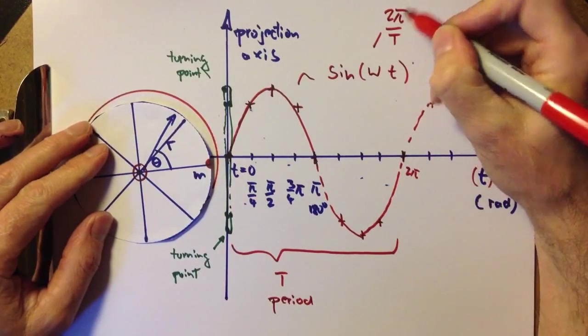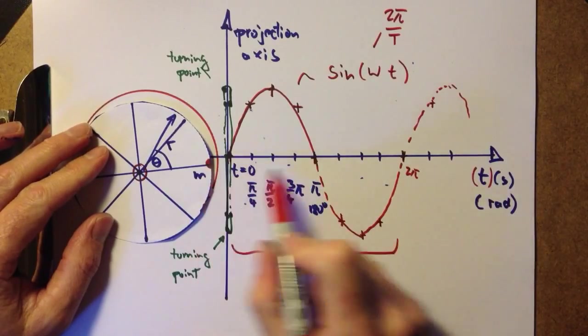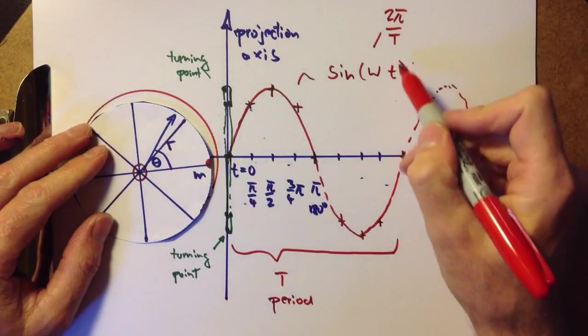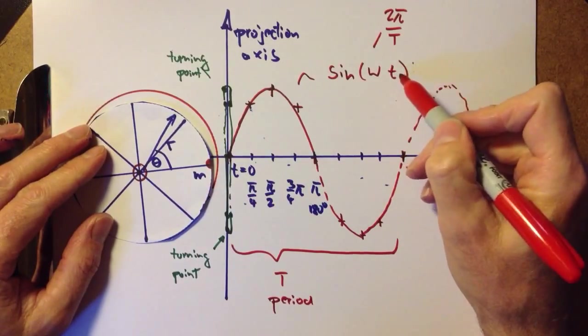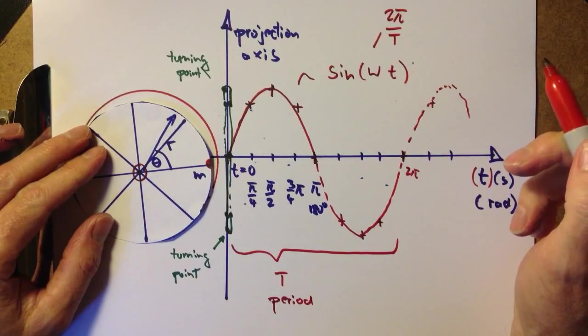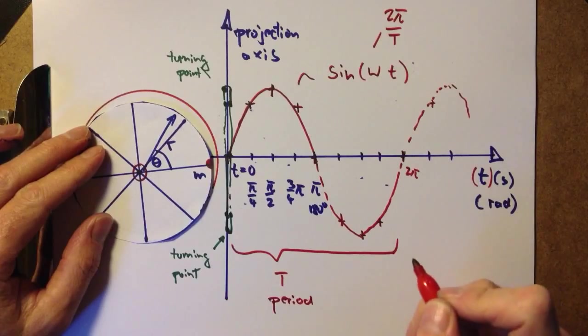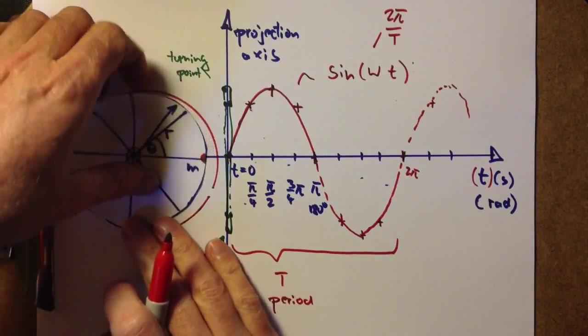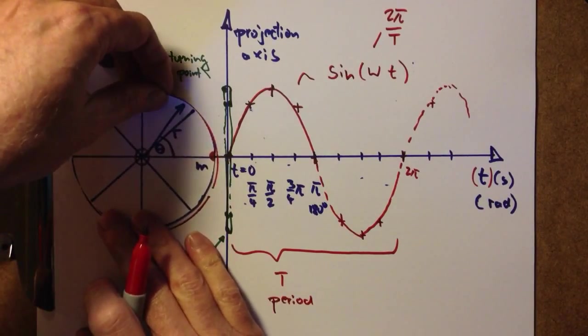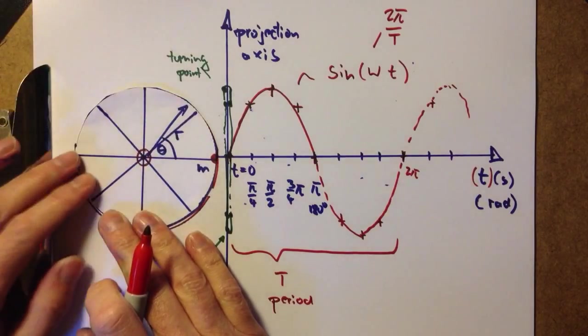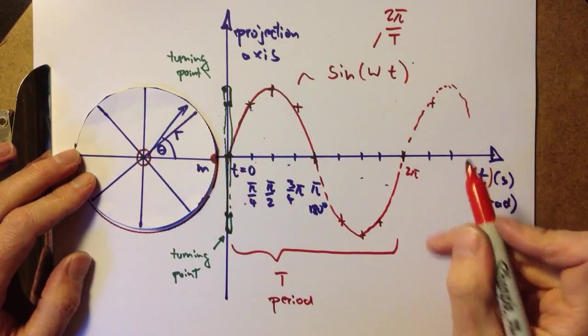Therefore, 2π over T gives us 2π divided by T times the time t gives us 2π at this point. And that is one period of the rotation and is also one period of its regular function.